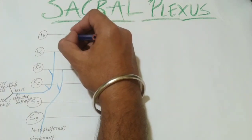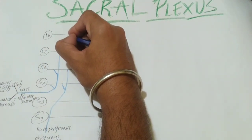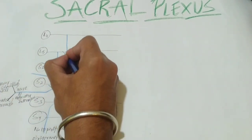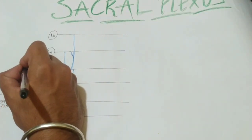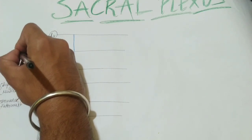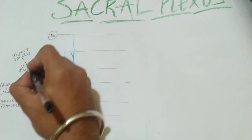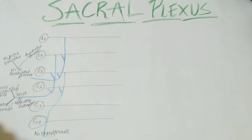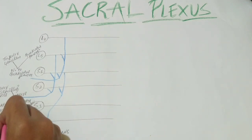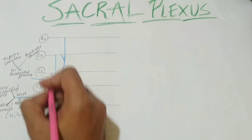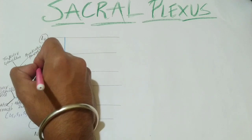The last nerve from the dorsal division is the nerve to quadratus femoris, coming from fibers of L4, L5, and S1. It supplies two muscles: the inferior gemellus and, by the name, the quadratus femoris. So those are the three nerves from the dorsal divisions: nerve to obturator internus (L5, S1, S2), nerve to piriformis (S1, S2), and nerve to quadratus femoris (L4, L5, S1).